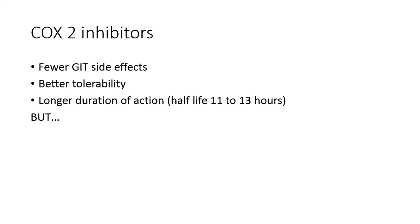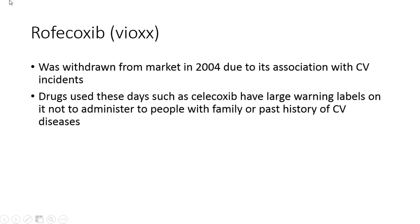COX-2 inhibitors make a lot of sense: COX-1 is constitutively active while COX-2 is induced only during inflammation, so selectively inhibiting COX-2 is logical. These drugs also have fewer GI side effects, better tolerability, and a longer duration of action with a half-life of 11 to 13 hours. However, rofecoxib (Vioxx) was withdrawn in 2004 due to its association with cardiovascular events. Drugs used today, such as celecoxib, carry large warning labels advising against use in people with a family or personal history of cardiovascular disease.